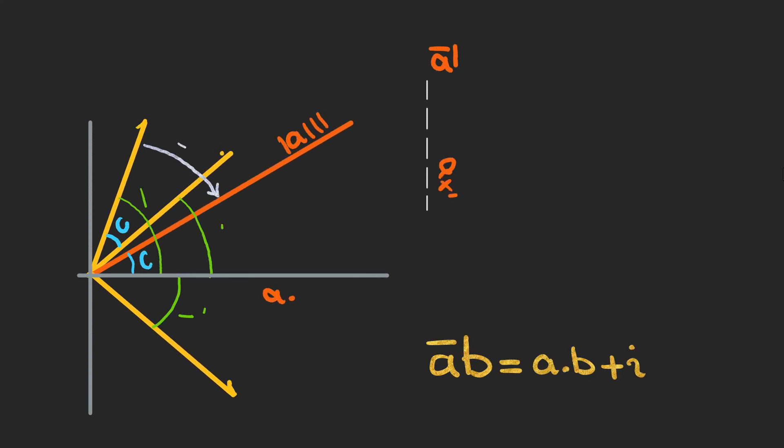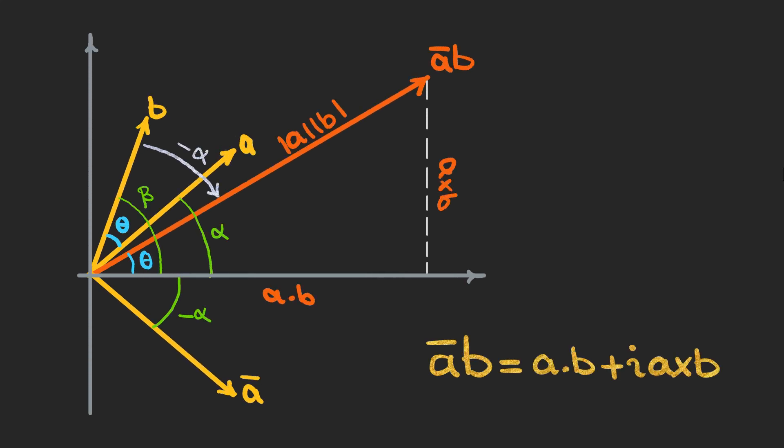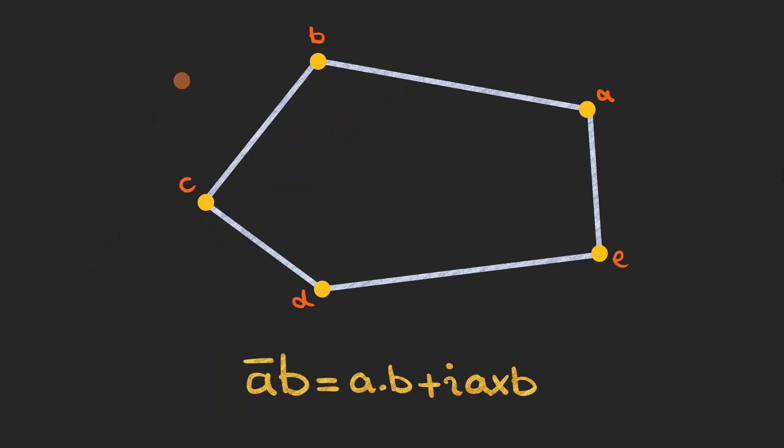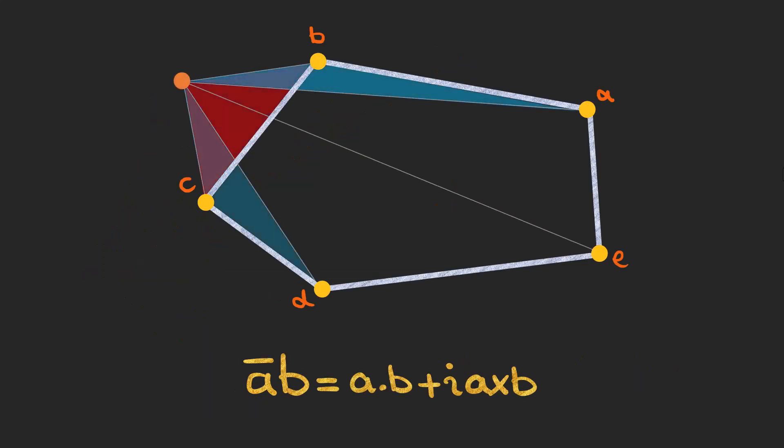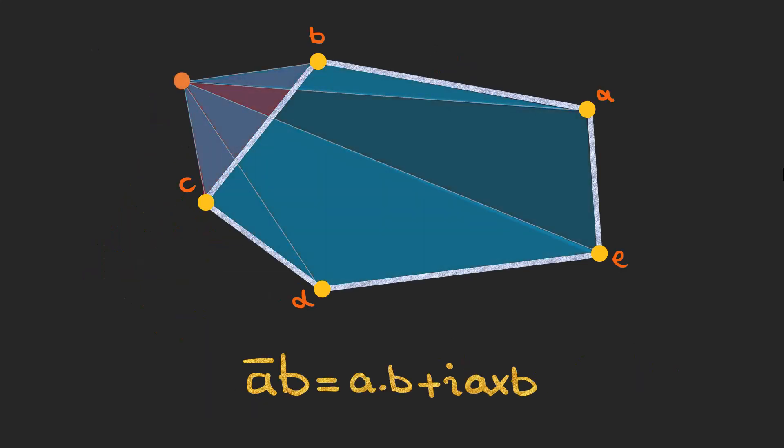In this video I'm going to show you how complex numbers are related to dot and cross products, and then we are going to use this relation to find the area of any polygon you can imagine.